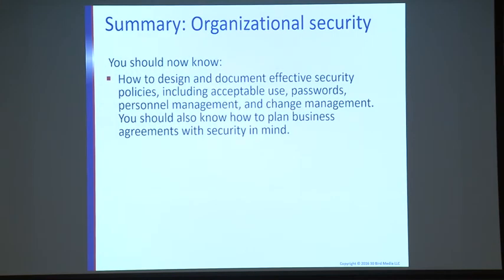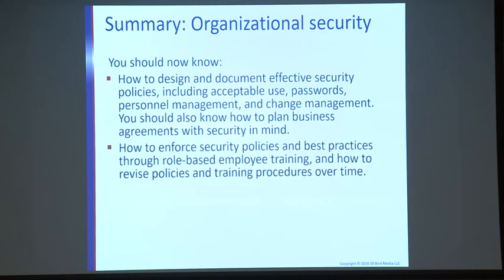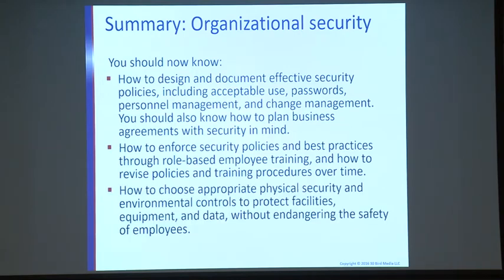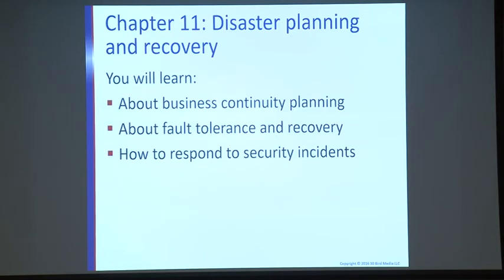Chapter summary: We looked at how to design and document effective security policies including acceptable use, passwords, personnel management, and change management. We examined business plan agreements with security in mind, how to enforce security policies through role-based employee training, and how to revise policies and training over time. We then covered how to choose appropriate physical security and environmental controls to protect the facility, equipment, and data without endangering employee safety.